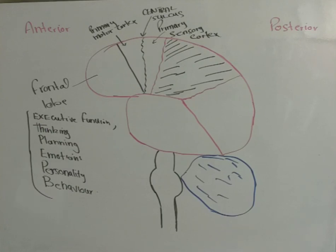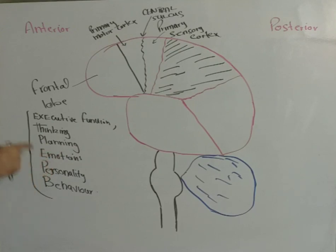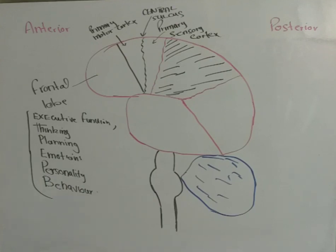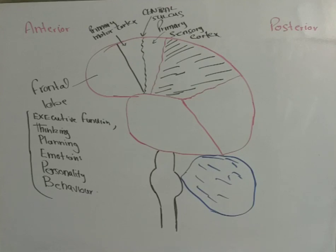Otherwise, the frontal lobe is involved with the executive functioning of the body and the brain. It is involved in the thinking process, the planning process, and it has to do with emotions, personality, and behavior. All the executive functions we carry out in our lives are more concerned with the frontal lobe. We have seen in movies that aliens have a bulging, larger frontal lobe protruding from their skull — the larger the frontal lobe, the greater the ability to execute planning and better thinking.